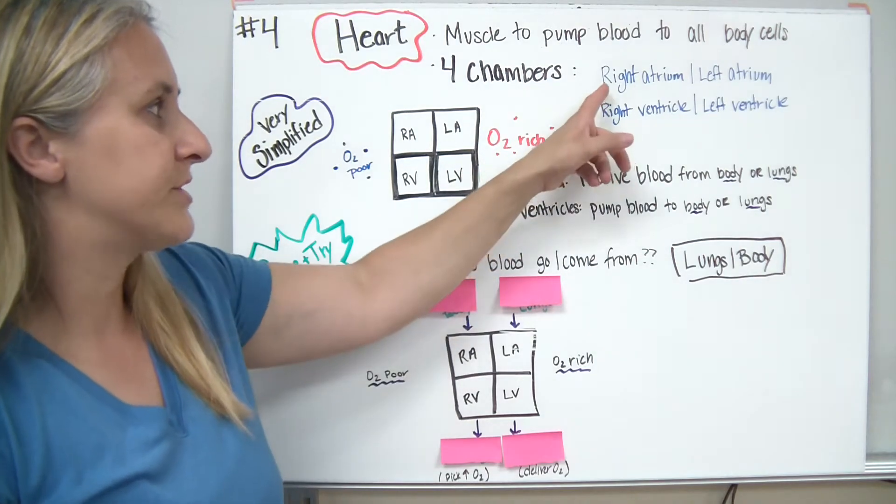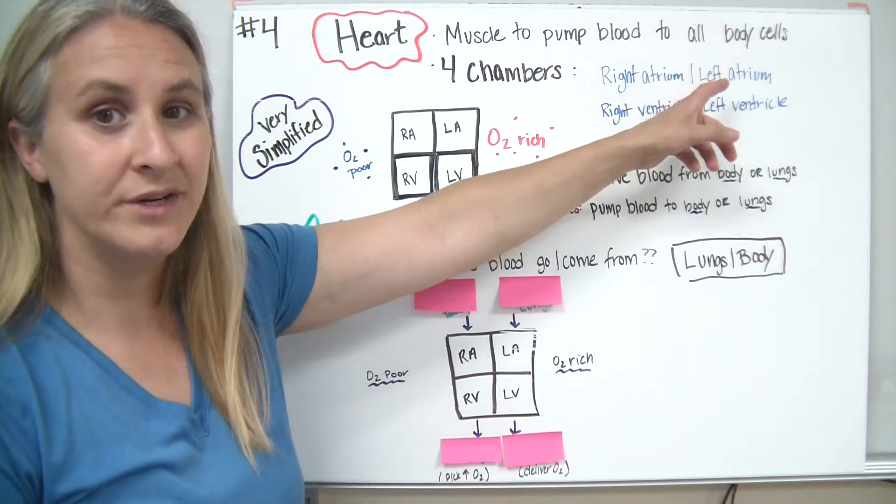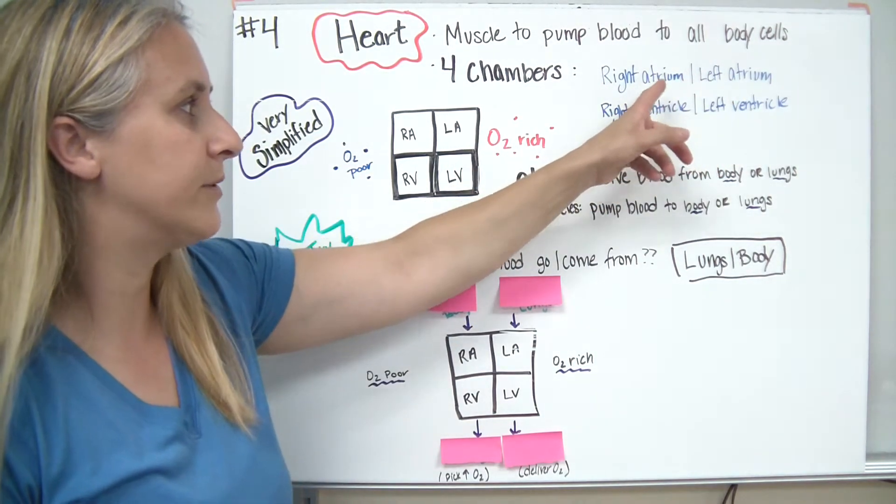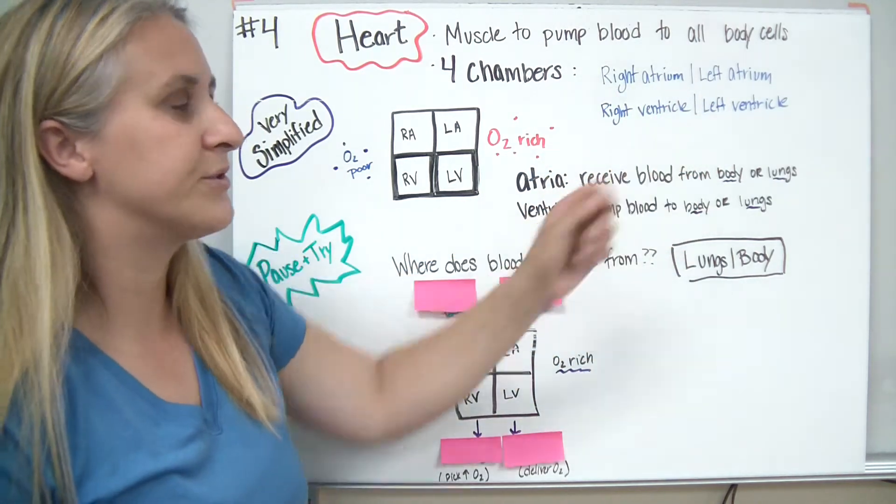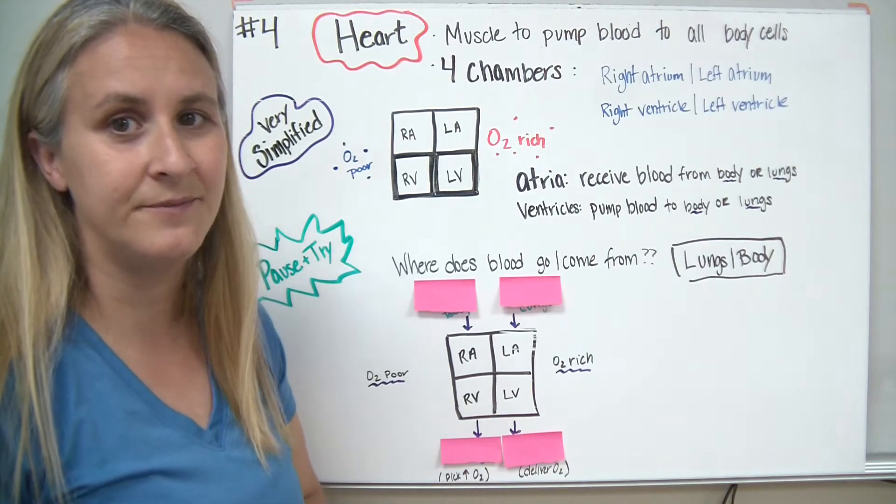The heart is made up of four chambers. The upper chambers are called the atria, which is plural. Atrium would be singular, so there's a right and a left side. The lower chambers are called the ventricles, and there's also a right and the left side to that.